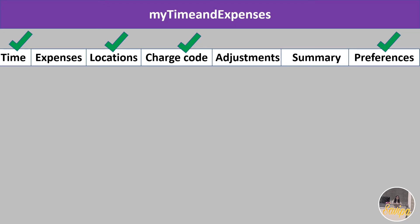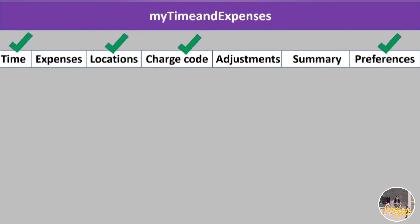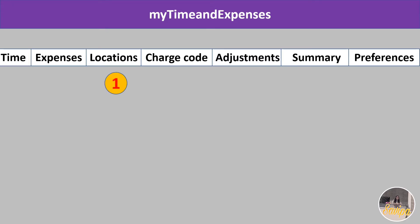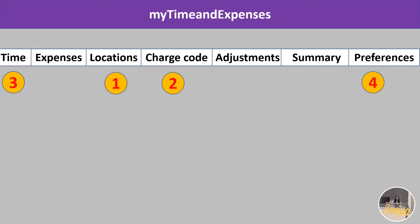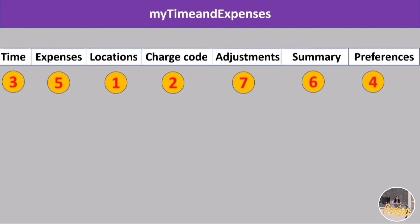Out of all these tabs, Time, Locations, Charge Code, and Preferences are mandatory and very important — do not skip these. The order I follow is: first Locations, second Charge Code, third Time, fourth Preferences, fifth Expenses, sixth Summary, and seventh Adjustments. Adjustments are not mandatory. I suggest you follow this same order as it's easy and convenient.